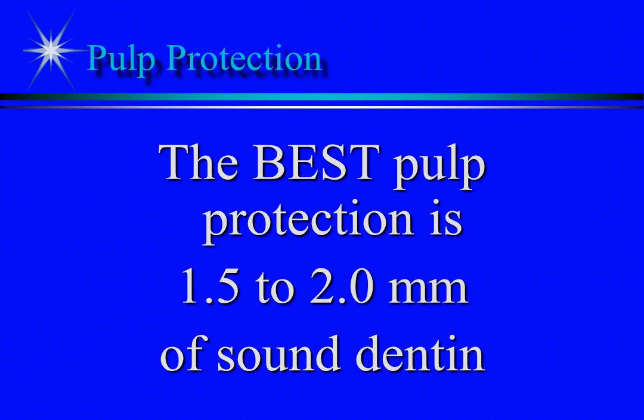Non-carious dentin exposure will be discussed further in another lecture. These non-carious areas, like abfraction lesions, may or may not be sensitive to the patient. When sensitive, we can apply a layer of desensitizing material or place a restoration to cover and occlude the dentinal tubules. Recall that inner dentin and outer dentin differ in structure and composition.